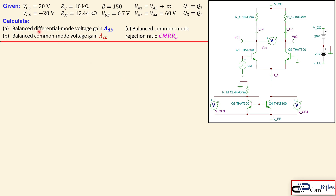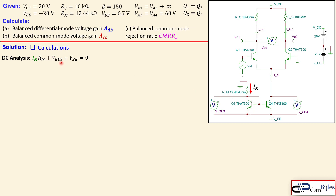We want to calculate the balanced differential mode voltage gain, the balanced common mode voltage gain, and from those the balanced common mode rejection ratio. Starting with DC analysis: applying KVL around the mesh containing RM, the base-to-emitter junction of Q3 (VBE3), and the supply voltage VEE, we can set up the equation to solve for IM.